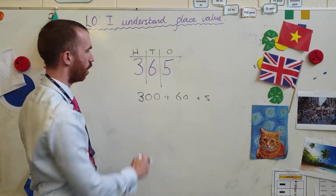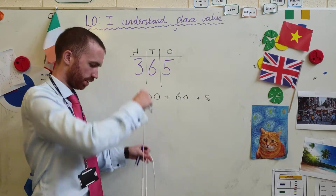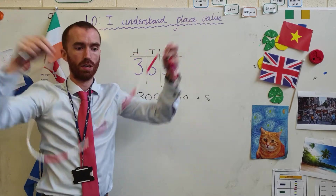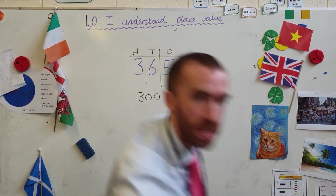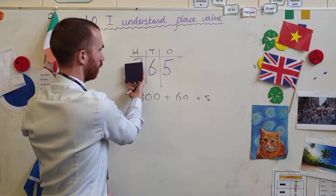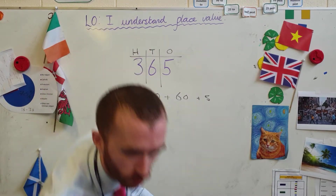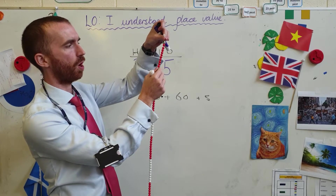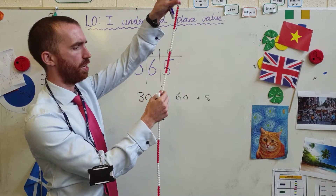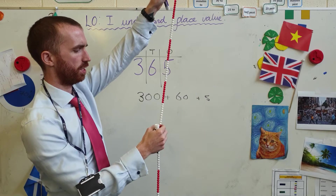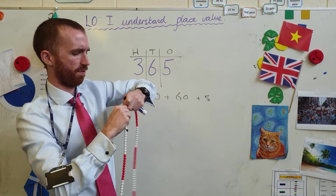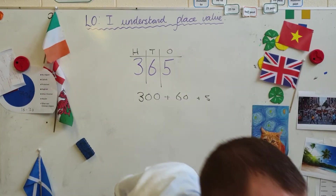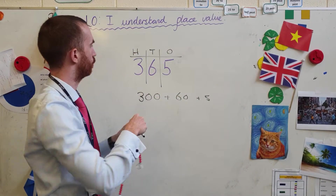So we can see we've got 300 — here is a hundred beads, and I've got three of these. So three of these here: 1, 2, 3. Then I've got 6 tens, so each of these separate colours are tens: 1, 2, 3, 4, 5, 6. Six tens — so if I slide those beads down, there's my 6 tens.